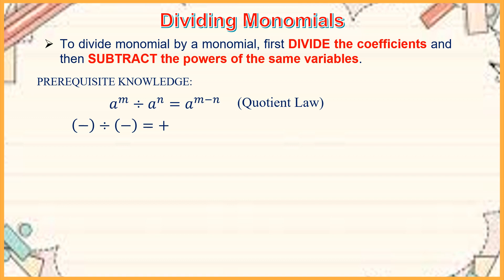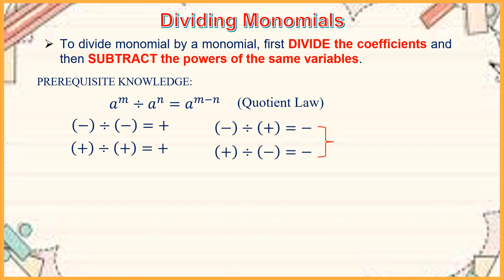And the rules for dividing integers: negative divided by negative equals positive, positive divided by positive equals positive, negative divided by positive equals negative, and positive divided by negative equals negative.